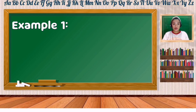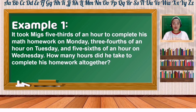Example number one. It took Migs five-thirds of an hour to complete his math homework on Monday, three-fourths of an hour on Tuesday, and five-sixths of an hour on Wednesday. How many hours did he take to complete his homework altogether?